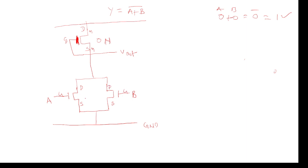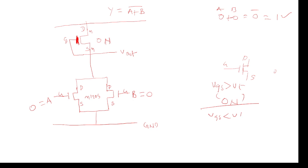All three are NMOS transistors. Now I am giving A equal to zero and B equal to zero. For an NMOS transistor, VGS — voltage between gate and source — must be greater than VT for it to turn ON. When VGS is less than or equal to VT, the transistor goes to OFF condition. With zero input, there is no sufficient VGS, so T2 and T3 go to OFF condition.